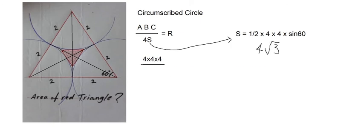So A × B × C equals 4 × 4 × 4 × √3. After substituting into the formula, we get the circumradius R equal to (4 × 4 × 4 × √3) / (3 × 4), simplifying to 4√3 / 3.